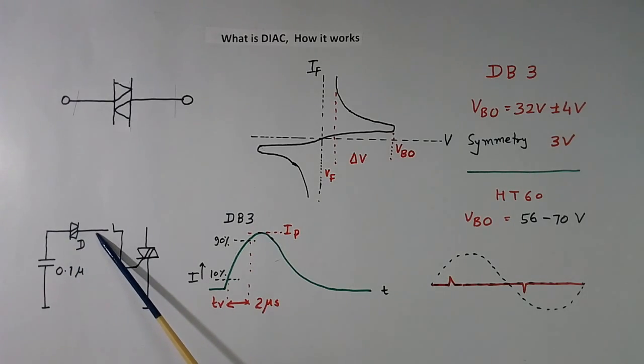And as soon as it becomes ON or starts conducting, current flows like this. This current is shown here. This is the gate current of TRIAC, the current flowing in the DIAC. This current has a rise time. For DB3, this rise time is 2 microsecond. It is written as TR. It is measured from 10% to 90% of the current. This is peak current.